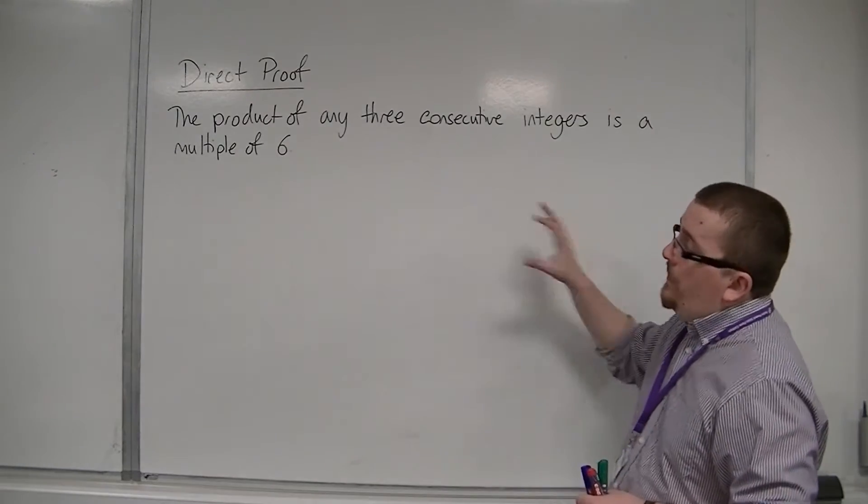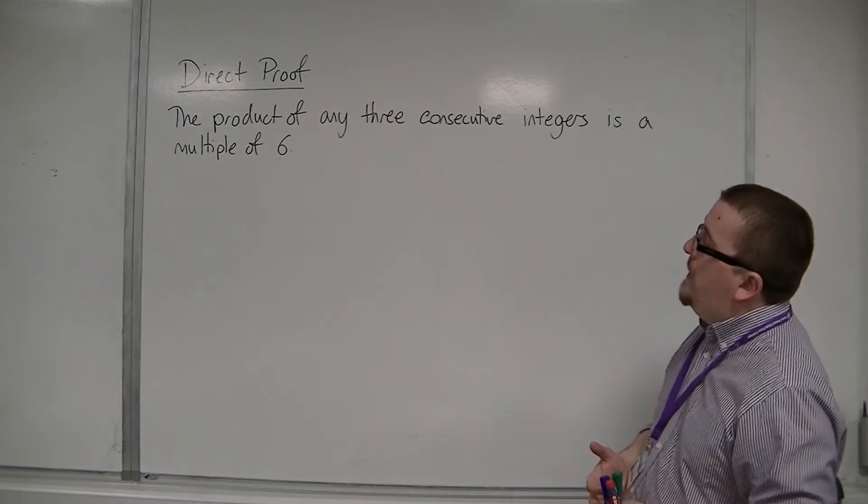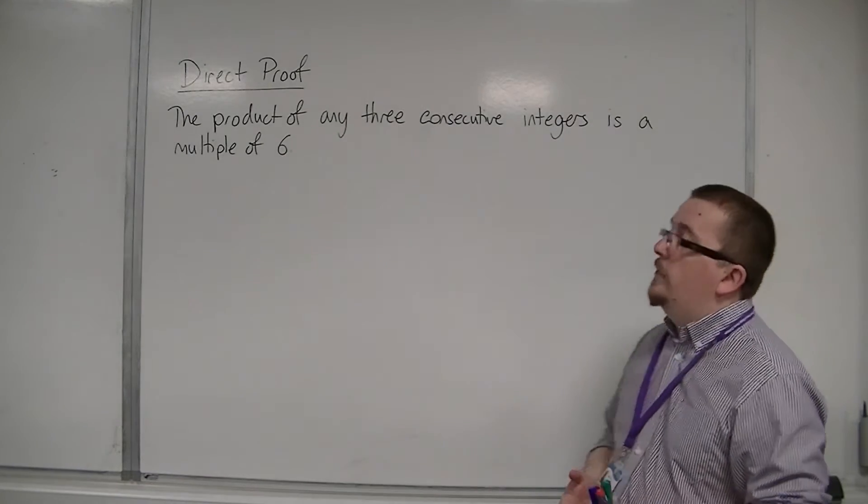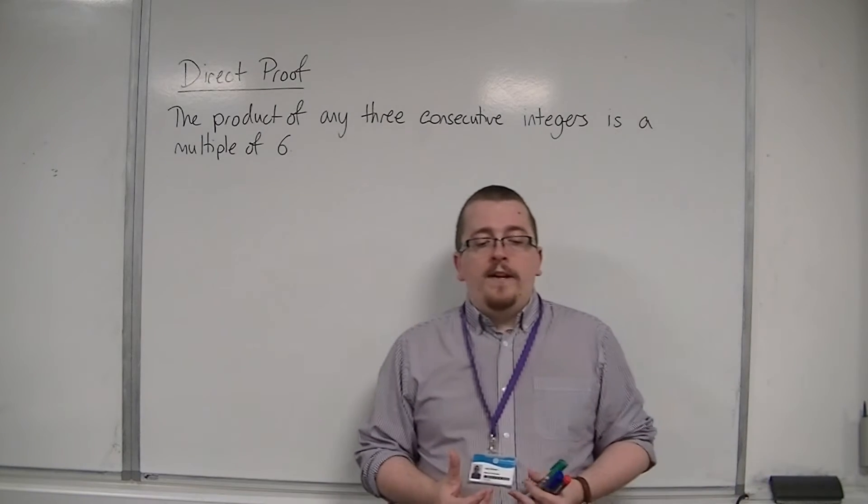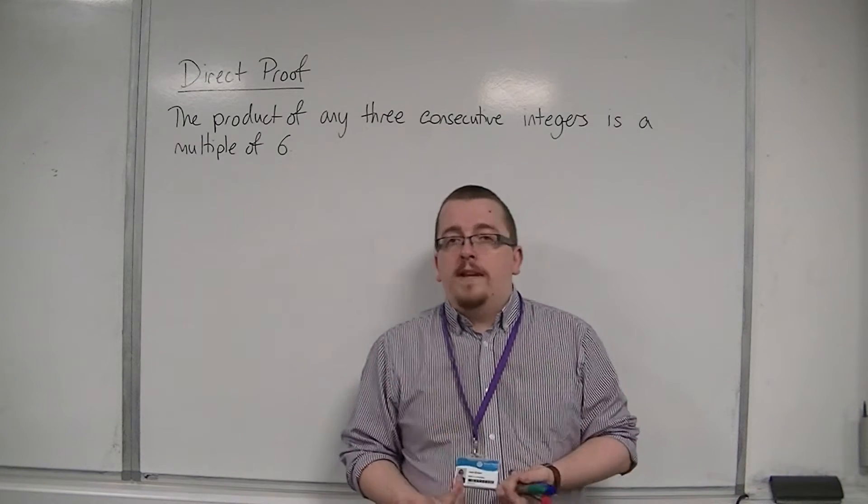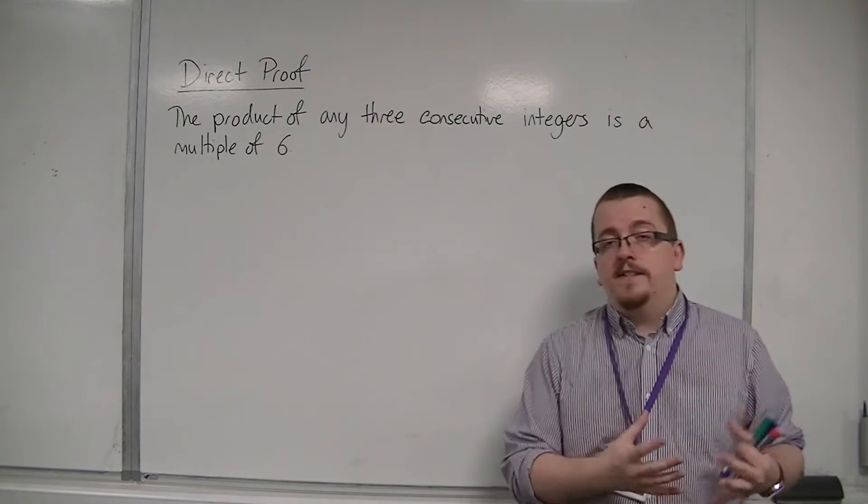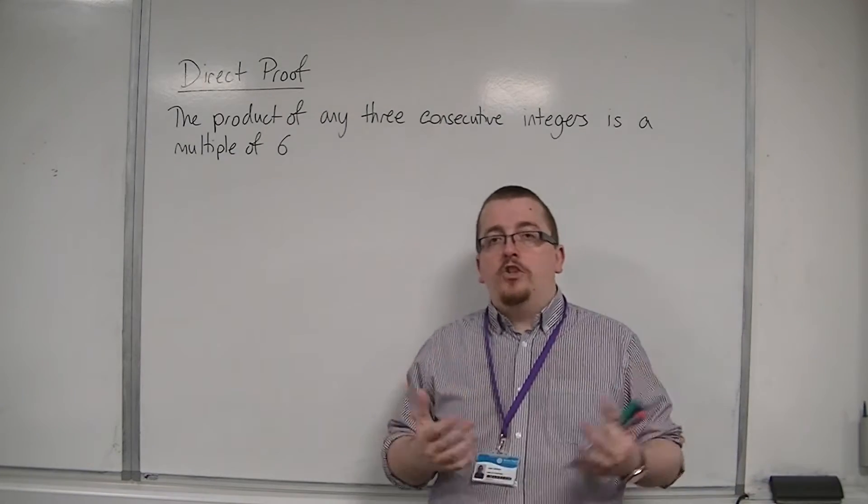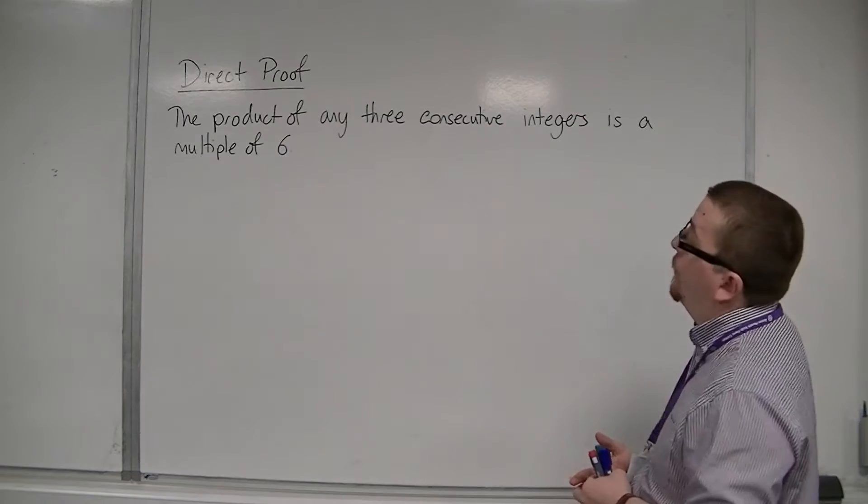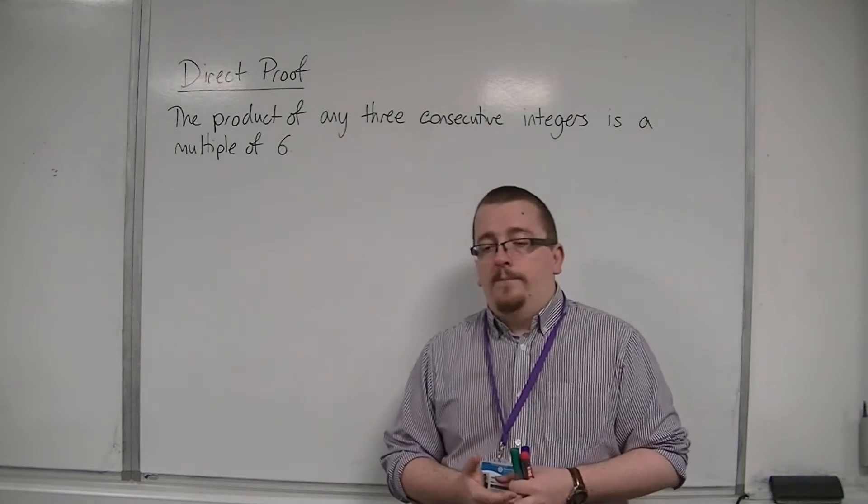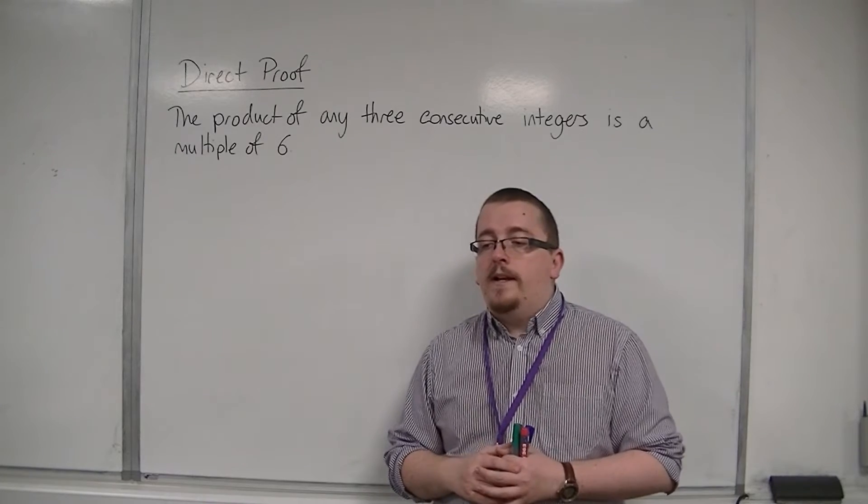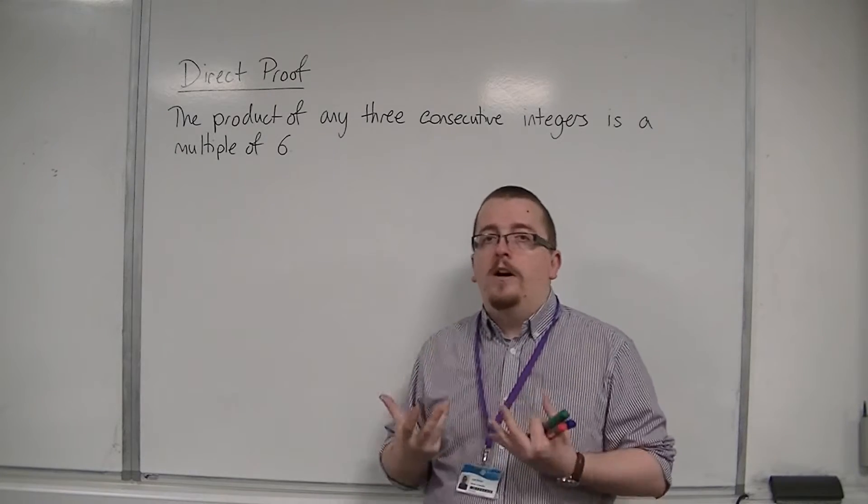So, with this example, the product of any three consecutive integers is a multiple of six. I expect a lot of people would jump straight in to write out three consecutive integers and try to show that it must be a multiple of six. Doing it that way is quite difficult. There is an easier way, and it's through logical argument.